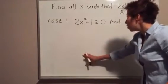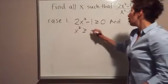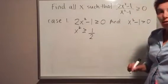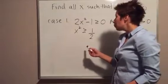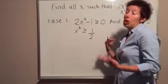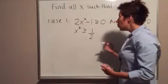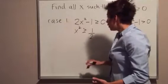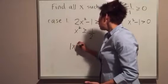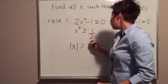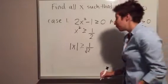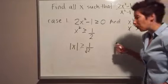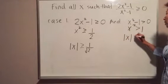If we solve the numerator part, we get x² ≥ 1/2 after bringing 1 over and dividing both sides by 2. When solving this as an inequality, we don't just conclude x ≥ ±√(1/2) as we would with an equal sign. We use the fact that we're solving an inequality: taking the square root gives |x| ≥ 1/√2. Similarly, for the denominator x² > 1, which gives |x| > 1.